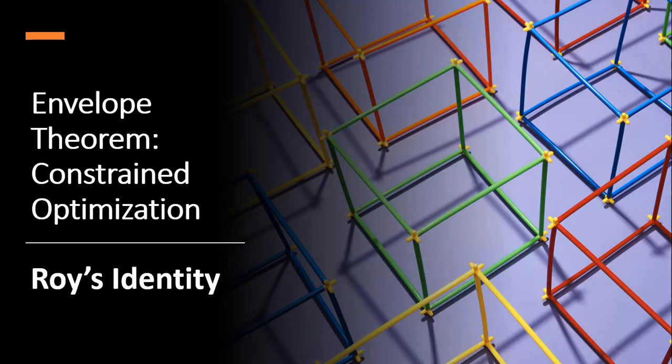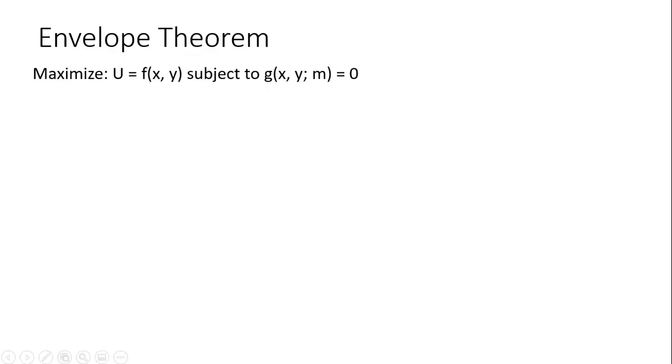Hello. In this video, we're going to look at the envelope theorem, but this time using constrained optimization. And then we're going to apply it to something called Roy's identity. So the envelope theorem under constrained optimization.